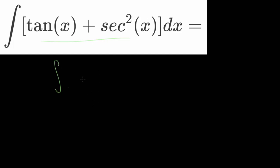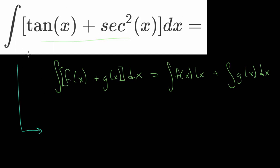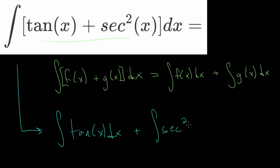So for instance, if we have the integral of f of x plus g of x dx, we can separate this into two integrals: the integral of f of x dx plus the integral of g of x dx. So let's start by rewriting this integral as the integral of the tangent of x dx plus the integral of the secant squared of x dx.